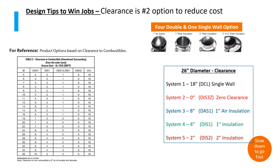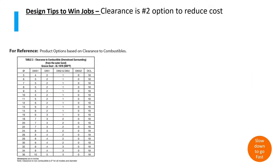Let's do another one. Our next diameter is 26 inches. The first system has 18 inches of clearance, so once again the DCL product. Zero clearance is the DIS 3Z, then the DAS 1, which is air insulation between the double wall product, 1 inch of insulation, and 2 inches of insulation.